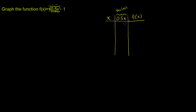Let's think about all the perfect squares: we could start with 0, then 1, then 4, then 9, then 16, then 25. These are the first five perfect squares — and for 0, you take the principal square root and get 0. These would be good values for 0.5x.